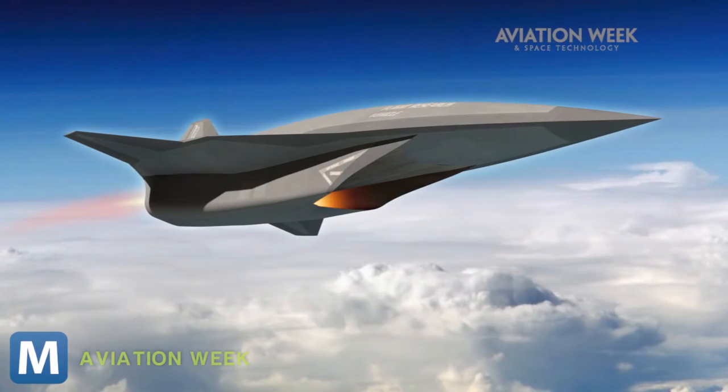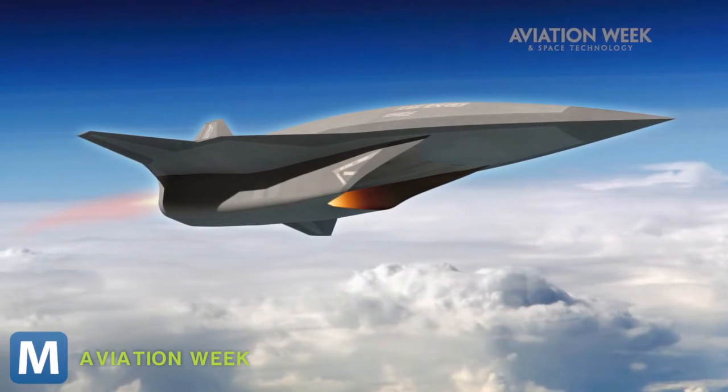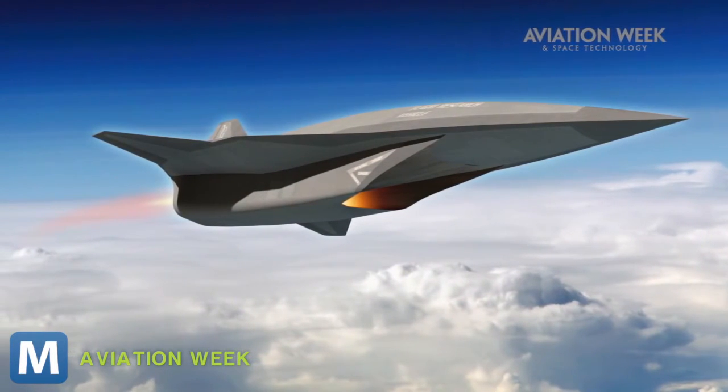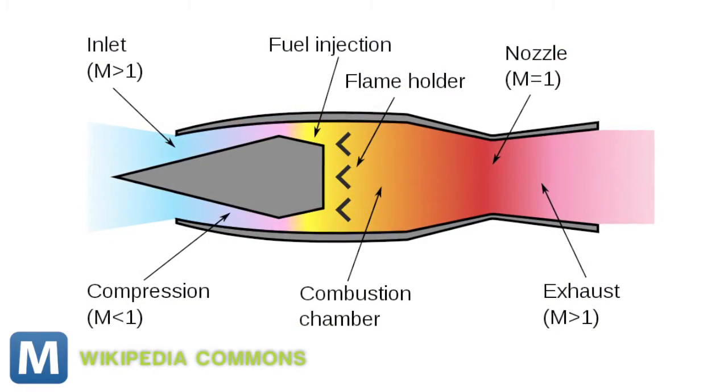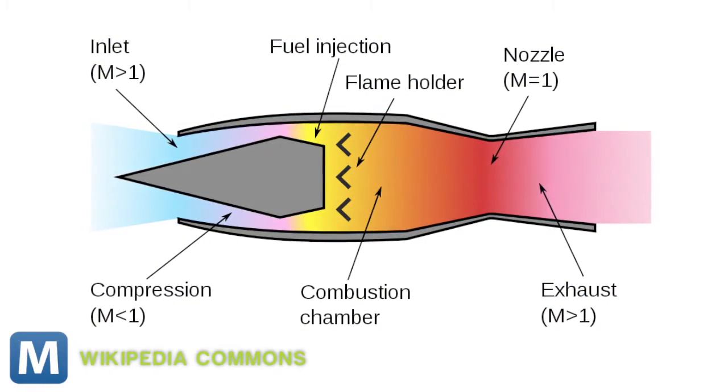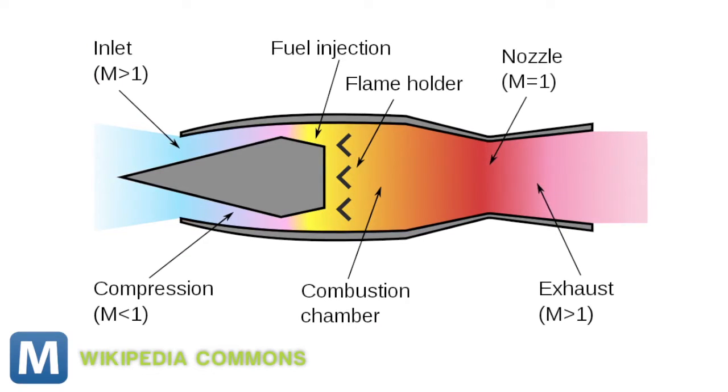It will house a typical jet turbine capable of getting the plane to Mach 3. At that point, a ramjet will kick in and bring the plane closer to Mach 6. Ramjets use the engine's forward motion to compress incoming air, creating more thrust for the plane.